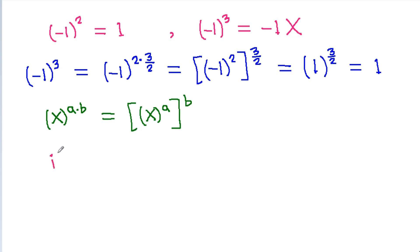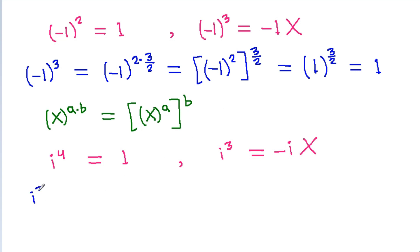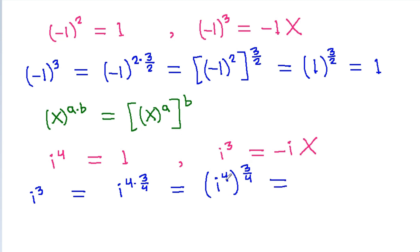What is iota power 4? It is equal to 1. Now, what is iota power 3? It is equal to minus iota. But iota power 3 is equal to iota power 4 times 3 by 4. And it is iota power 4, whole power 3 by 4, that is 1.